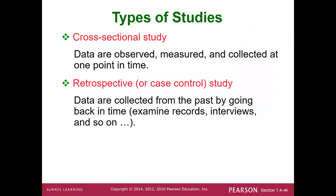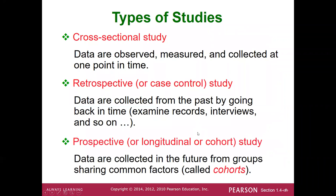Other study types include cross-sectional, retrospective, and prospective. Retrospective means data is collected based on the past — for example, looking back at events from the 80s or 90s. Prospective means collecting data going into the future. That's a major difference between these given study types.